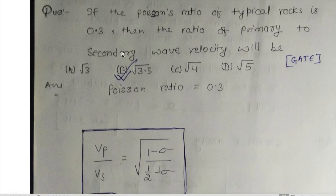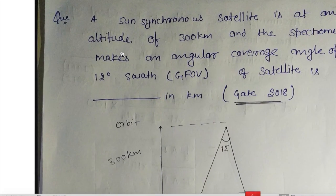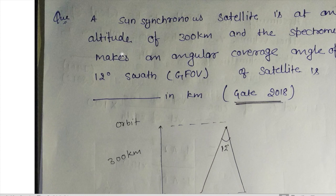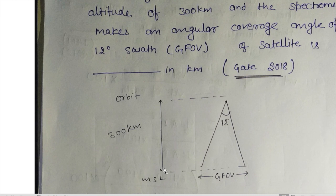Moving to the next question: a sun-synchronous satellite is at an altitude of 300 kilometers and the spectrophotometer makes an angular coverage angle of 12 degrees swath, that is GFOV. GFOV means Ground Field of View of a satellite in kilometers. Suppose this is MSL — mean sea level — and here is the satellite having a sensor called a spectrometer.